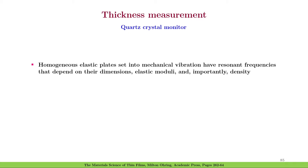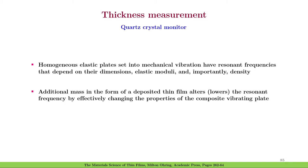Homogeneous elastic plates set into mechanical vibration have resonant frequencies that depend on their dimensions, elastic moduli and most importantly density. Additional mass in the form of a deposited thin film alters or lowers the resonant frequency by effectively changing the properties of the composite vibrating plate. This is the principle that underlies the use of crystal oscillators to measure film thickness.